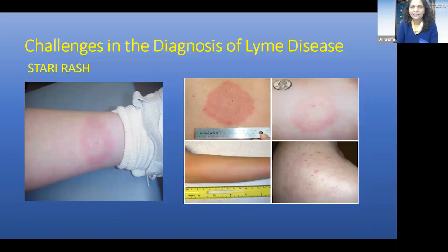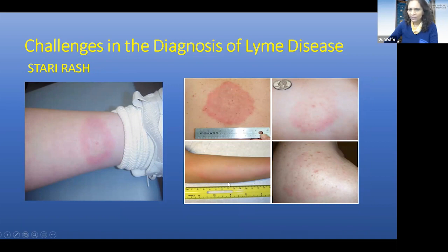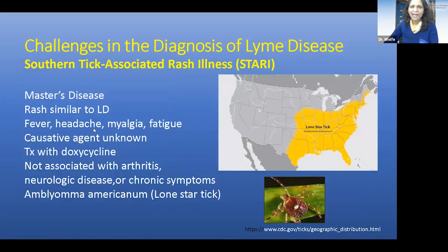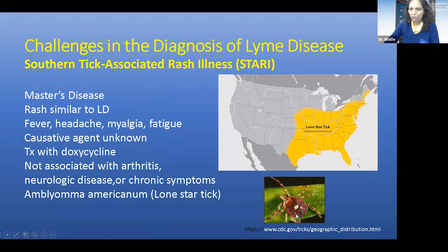This rash is related to another tick-borne illness called STARI, or Southern Tick Associated Rash Illness. It can have a central clearing just like Lyme disease, so it's important to keep this in mind. You may have patients who report a tick bite and then have a Lyme-appearing rash. The bacteria or agent that causes STARI is unknown. Typically patients just get the early symptoms — rash, fever, myalgias, fatigue — but they typically don't go on to have arthritis, neurologic disease, or chronic symptoms. It's associated with the Lone Star Tick, which is bigger than the Ixodes scapularis tick and has a distinctive white dot on its back.